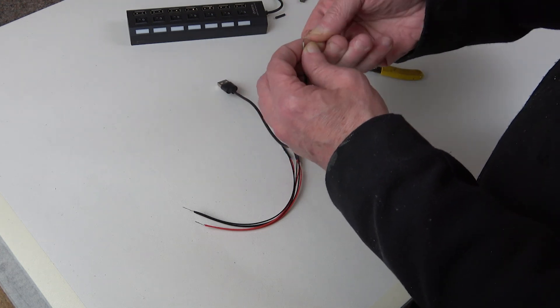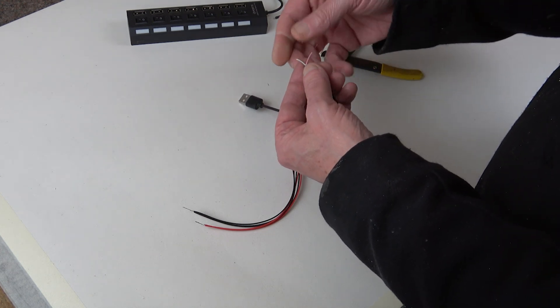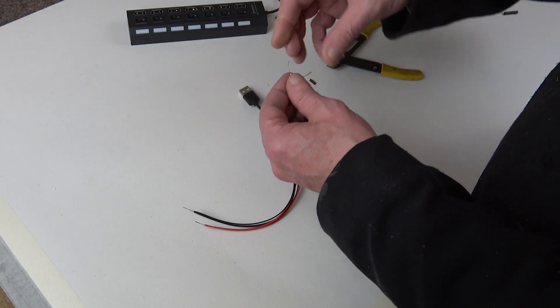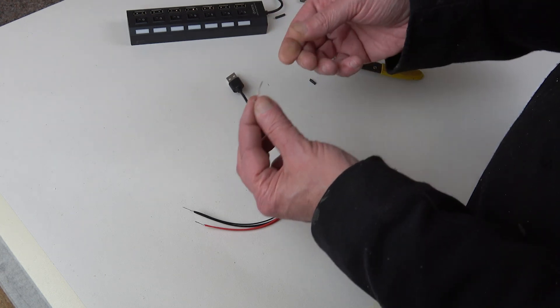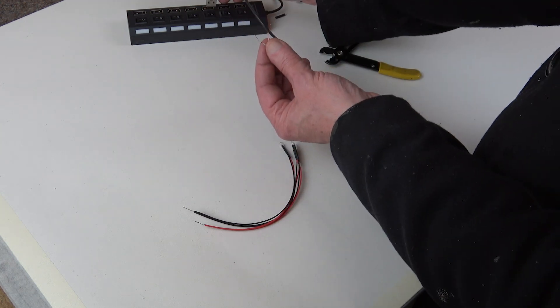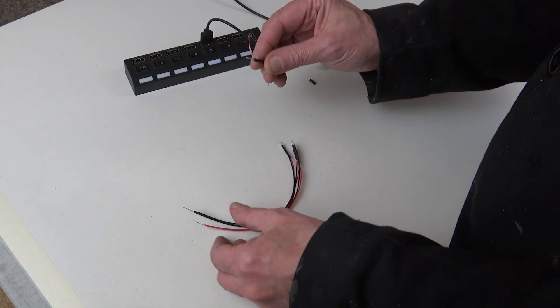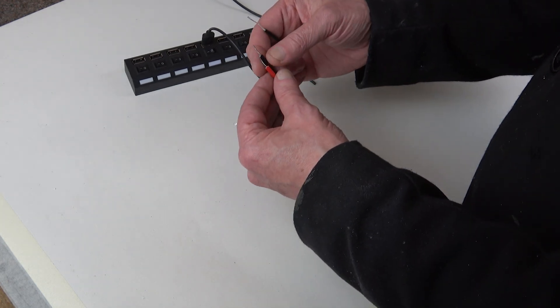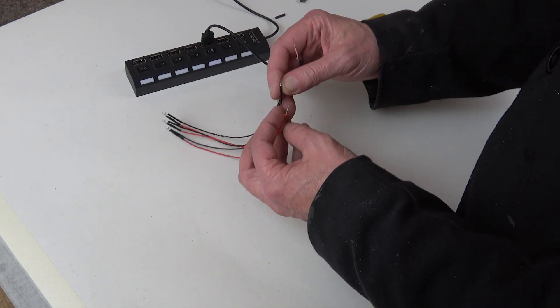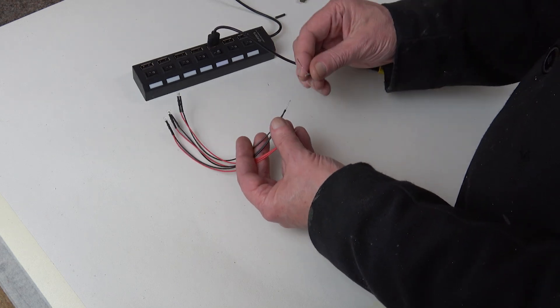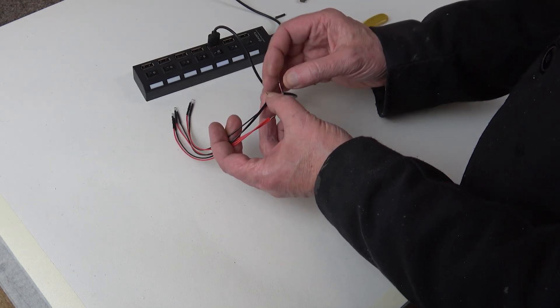Now the great bit about this is because this is a sort of pinky wire and a white wire, I don't really know which one's positive and which one's neutral. But because these are LEDs, if you wire them up the wrong way around they won't blow up, they just won't do anything.